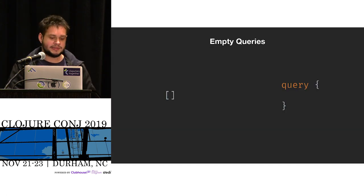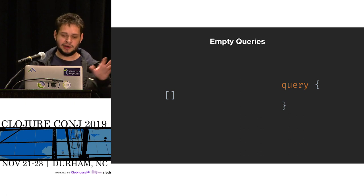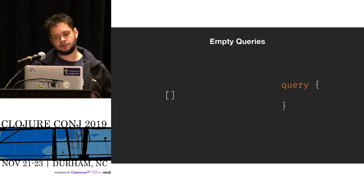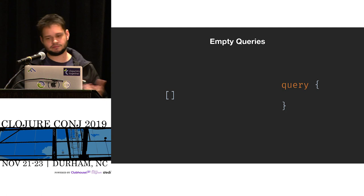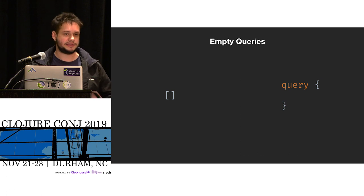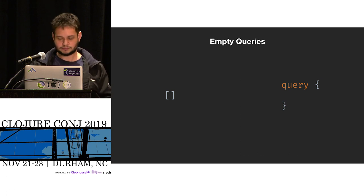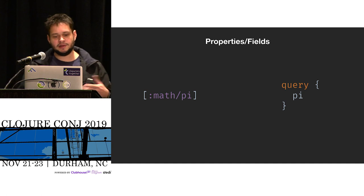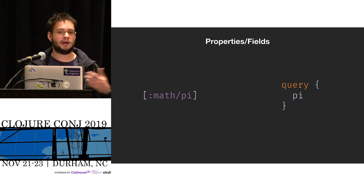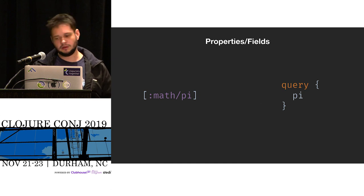To give a quick comparison of some syntactic features from GraphQL and EQL: the first example is empty queries. On the left you see the EQL empty query — that's a vector. On the right you see the GraphQL query — which is a string. And that's the first thing to notice: if you are in a Clojure world, EQL is just data. You can manipulate it as much as you want. Next, properties in EQL are expressed with keywords. In GraphQL, you just type them.